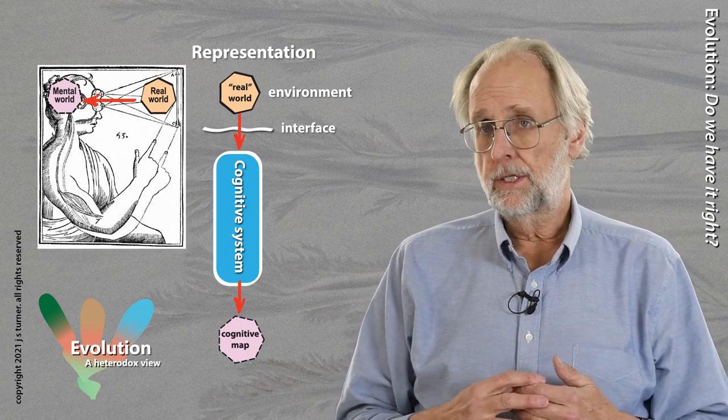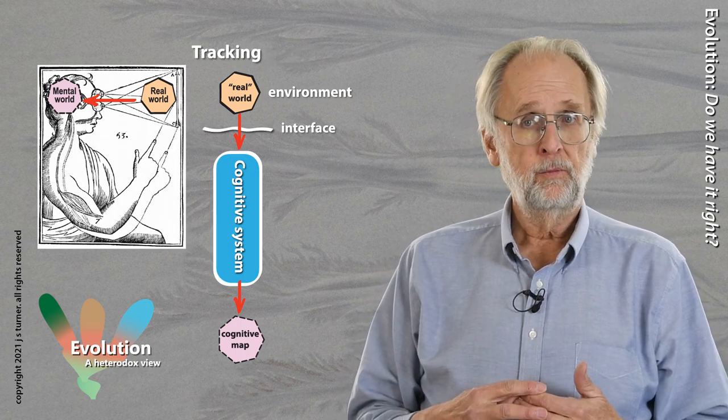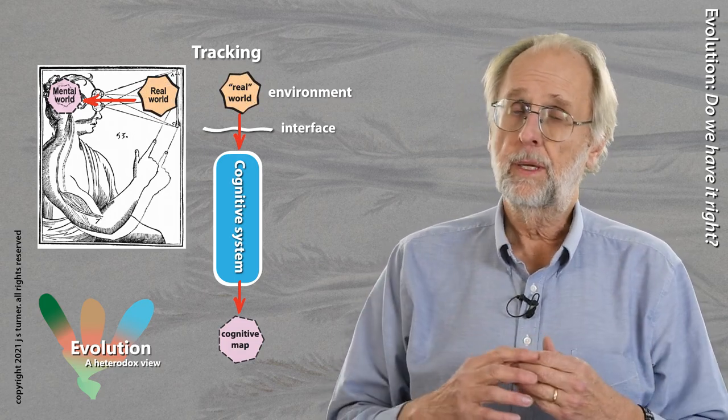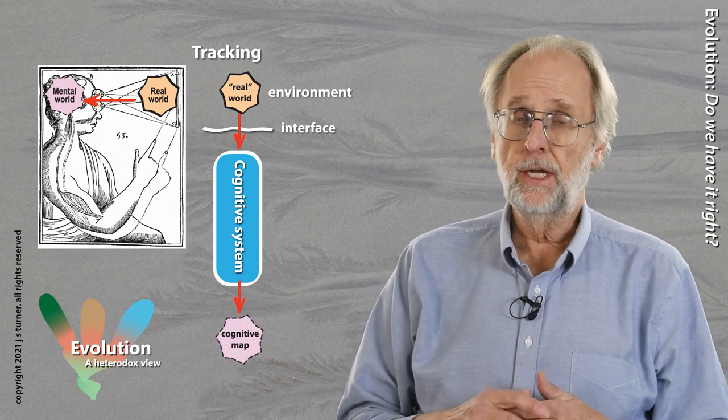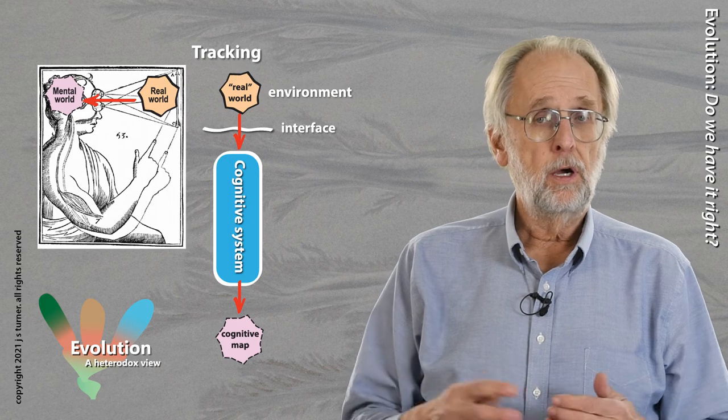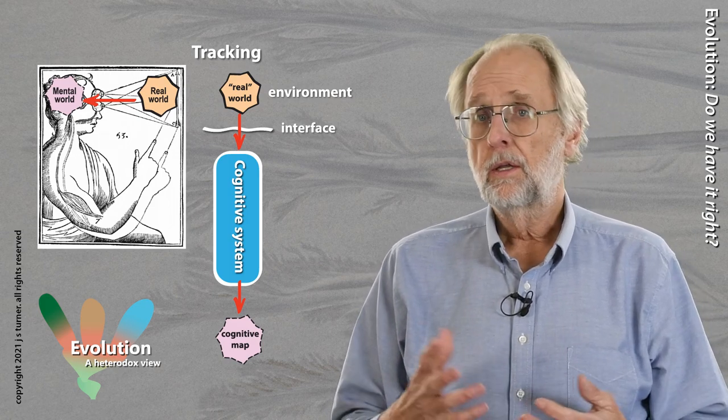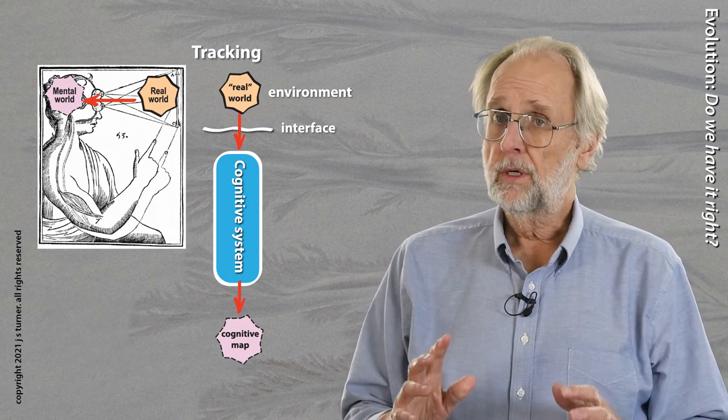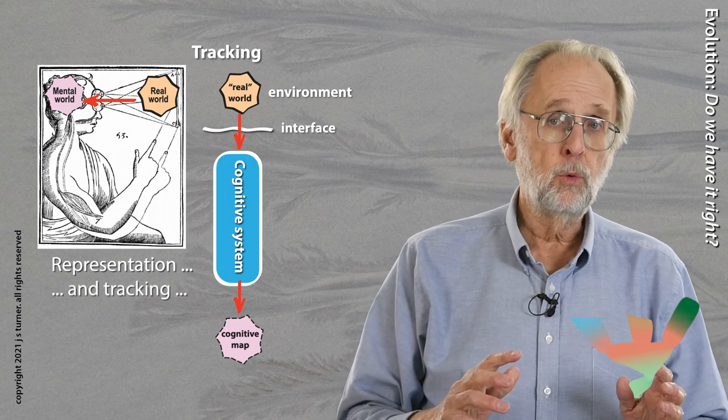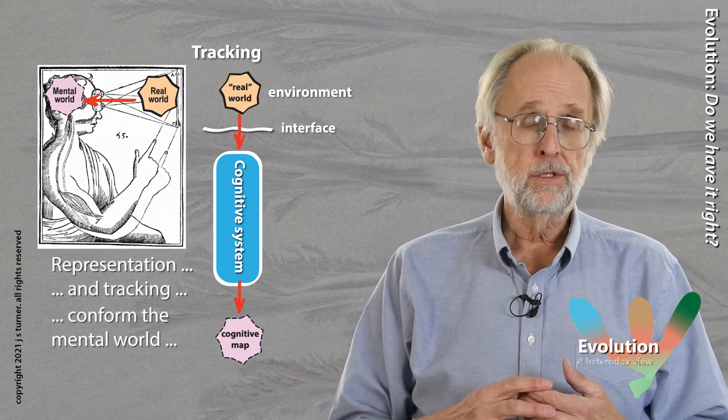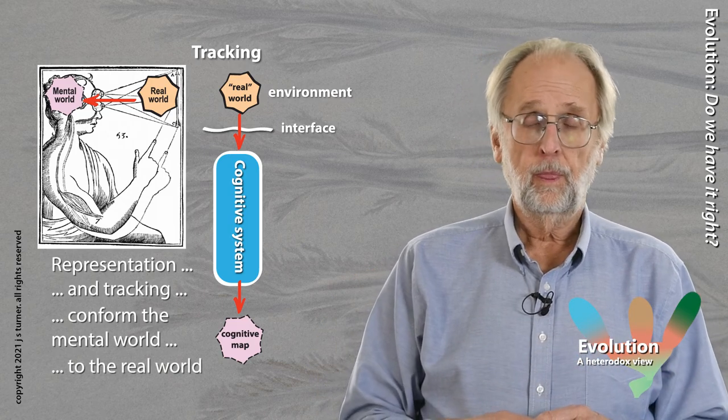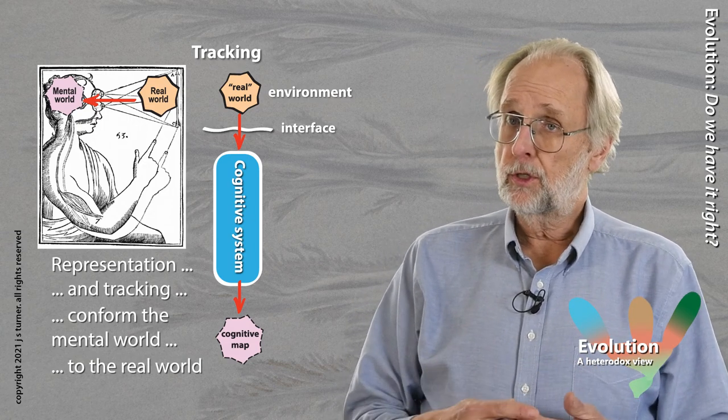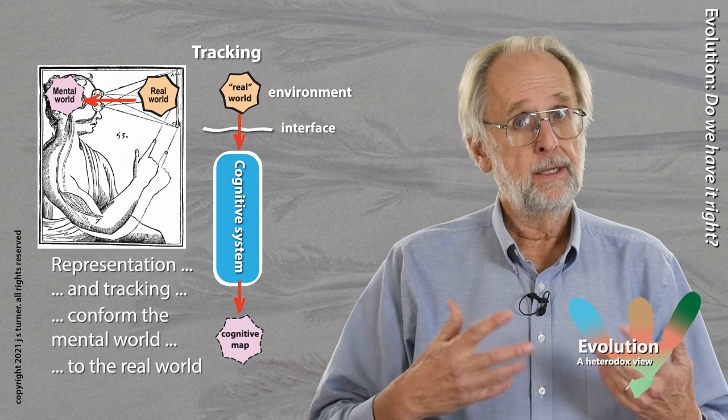Closely related to cognition is something we can call tracking. If there's some change in the outside world, a cognitive system will modify the mental image of the real world to correspond to the changes. That makes sense. If a cognitive system is to be of any use at all, the mental representation should change along with changes in the real world. In short, a cognitive system should bring the mental world into conformity with what the senses are saying about the real world. Okay, that's pretty straightforward. But conceptualizing cognition in this way reveals two other dimensions to cognition that might not be so obvious.